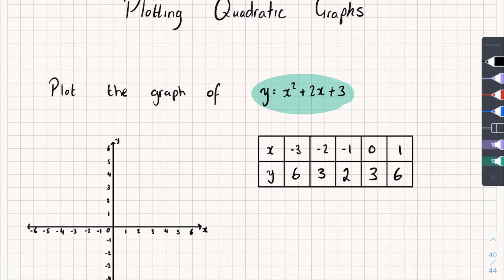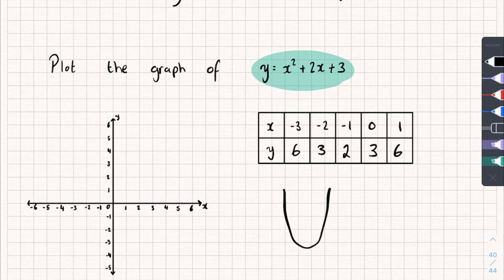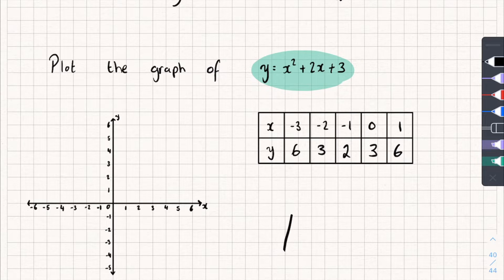Now quadratics, when we plot them, the shape we should get is something like this. It would either be a U shape like this or it will be an N shape like that. Now immediately you should be able to tell if it's going to be a U or an N shape because of the number in front of the x squared. If the number in front of your x squared is positive, you'll get a U shape like this. And if it's negative, you'll get an N shape like that. So instantly we're looking at this graph, we know it's going to be a U shape.